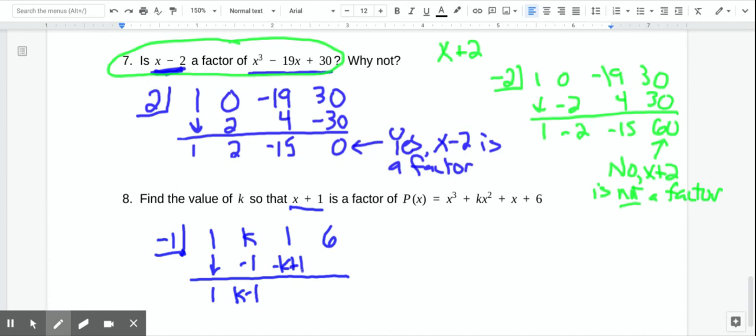And then we're going to add. So 1 plus negative k plus 1 is negative k plus 2. And then when we multiply by negative 1, you just have to multiply both those things by negative 1. So that'll give us positive k minus 2.